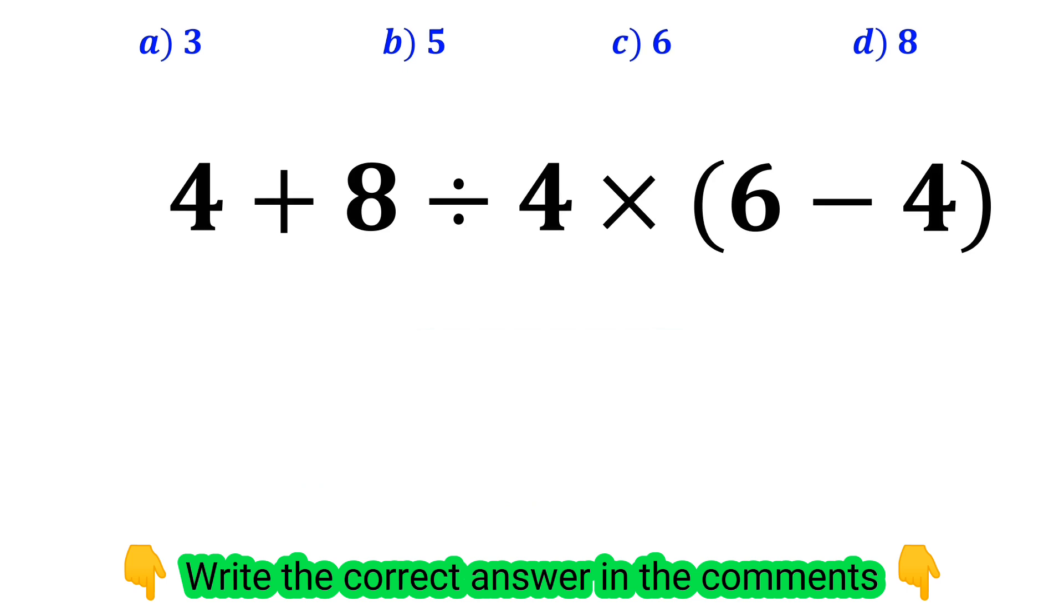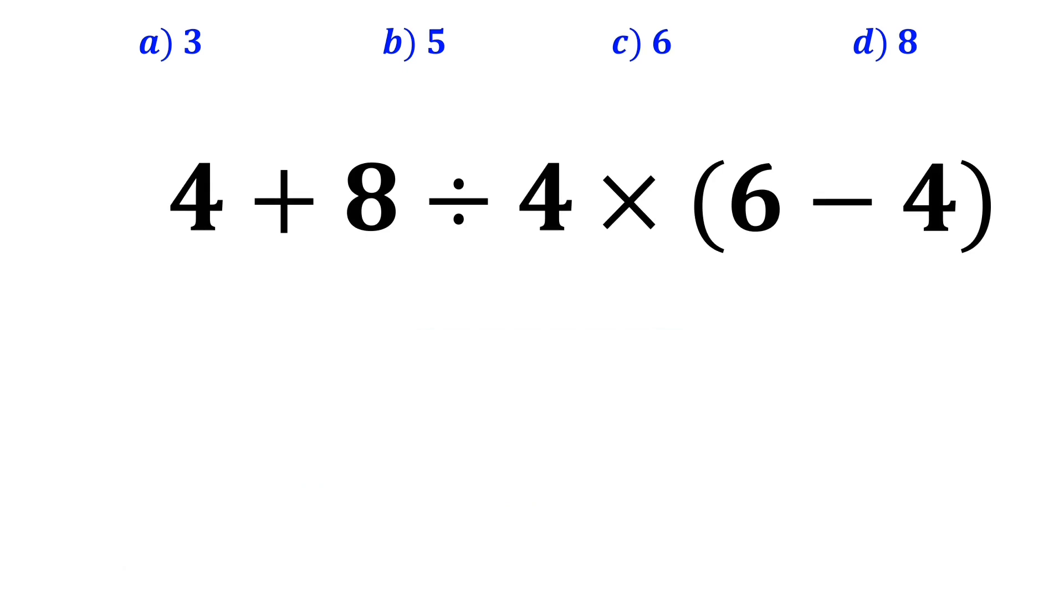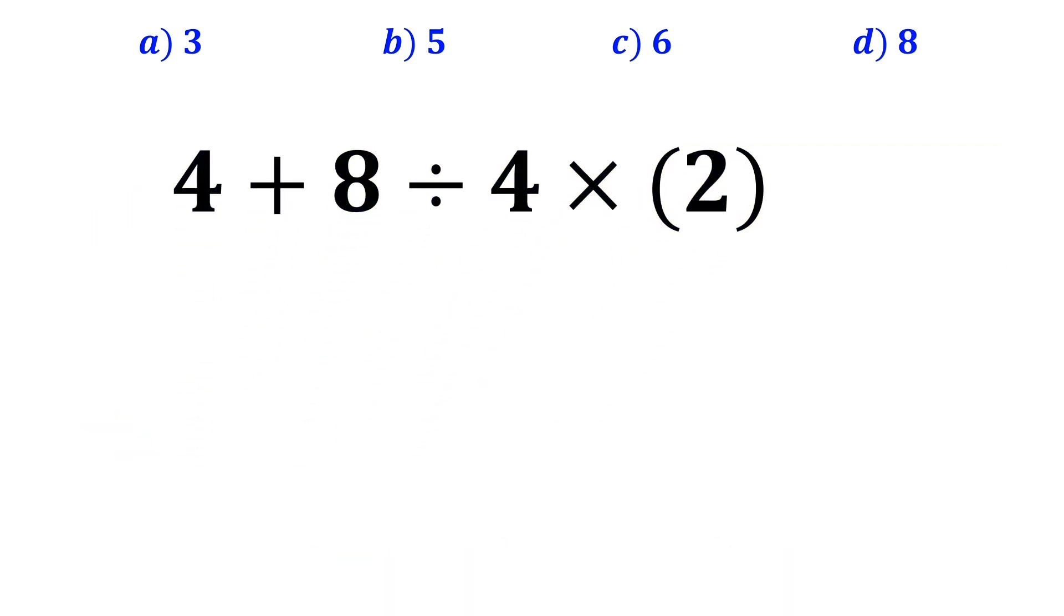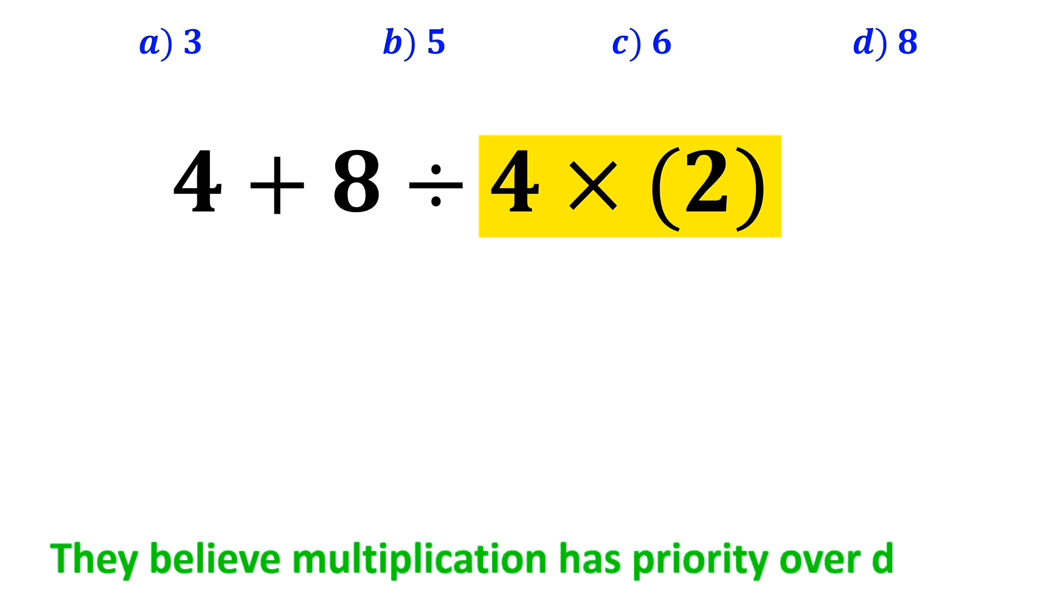Also, some people when solving this question first go for the parenthesis, and rewrite this expression as 4 plus 8 divided by 4 times 2. In the next step, they go for the multiplication between 4 and 2, because they believe multiplication has priority over division.